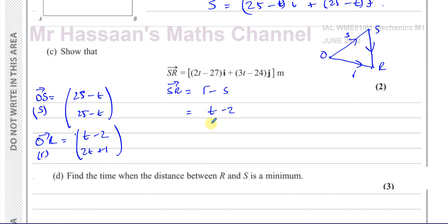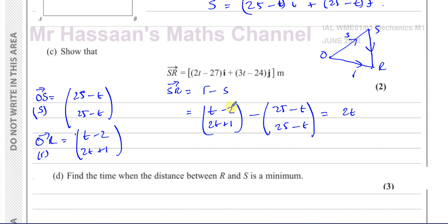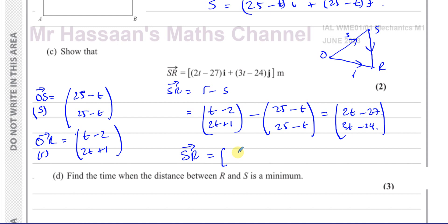So computing r minus s: the i component is (t−2) minus (25−t) = t − 2 − 25 + t = 2t − 27. The j component is (2t+1) minus (25−t) = 2t + 1 − 25 + t = 3t − 24. So we can say SR equals (2t minus 27)i plus (3t minus 24)j in meters, which is exactly what was required.